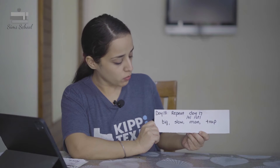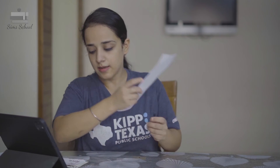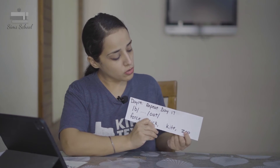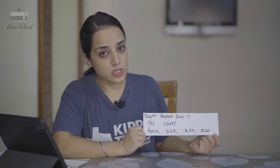On Day 18, you will repeat Day 17 but with different words — as I said, do not repeat the same words. So you will say 'b-ig', the child will say 'big'. You will say 'sl-ow', the child will say 'low'. You will say 'm-an', the child will say the rhyme. Day 19 also repeats Day 17 again with different words.